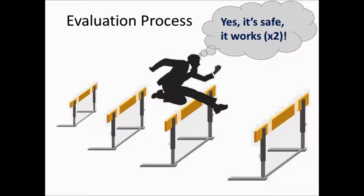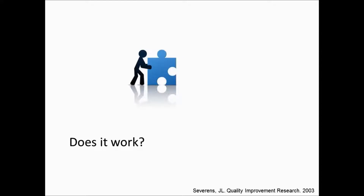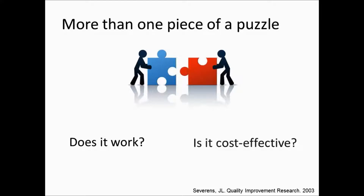I want to pause and highlight that the question of 'does it work' is very important — sometimes the most important question. What I'd like to propose is that there may be more than one piece of the puzzle. This second part focuses on helping you answer whether your intervention is cost-effective as well. Think of this as something that complements your primary analysis. When preparing a grant, your primary outcome addresses 'does something work,' and a secondary question could focus on 'is it cost-effective.'